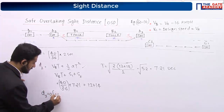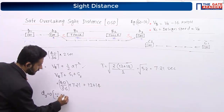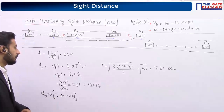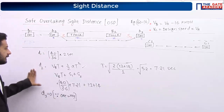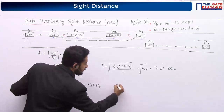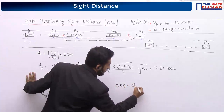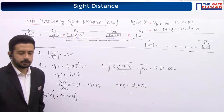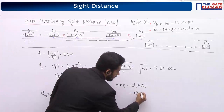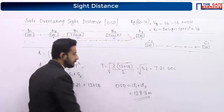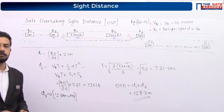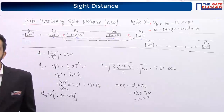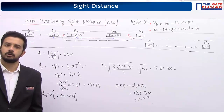What is the reason? Because it is a one-way road — there is no opposite vehicle. So our overtaking sight distance equals d1 plus d2 only. That will be approximately equal to 128.3. It is a multiple choice question; there may be an option like 130. T equals 7.21 seconds, d2 is 106.